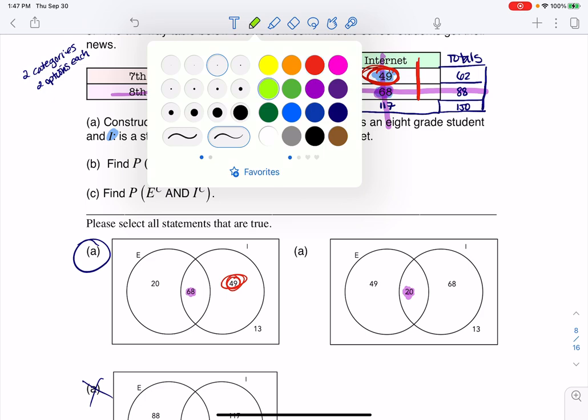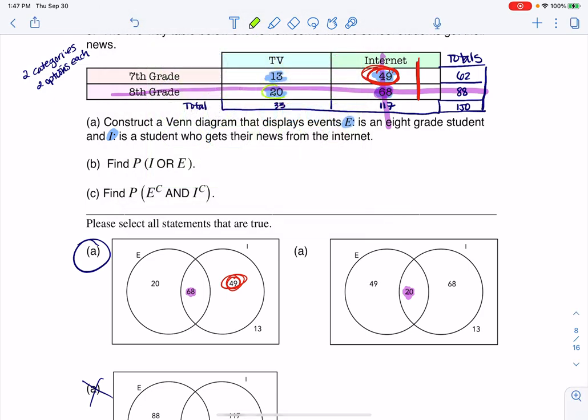And now let me change colors again. Let's try green. So let's take a look at these 20 students. These 20 students, they are 8th graders. But they get their information, their news from the television. So they need to be in the 8th grade circle, but they can't be in the internet circle.